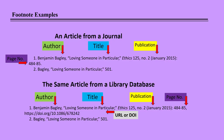Here are some examples of footnotes from different items. You will probably be citing a lot of articles in your academic work. Note number 1 in each example is the first time an item is cited. Number 2 is the second and subsequent times the item is cited with a shortened title. Notice that when the item is retrieved from a library database, the DOI is included.